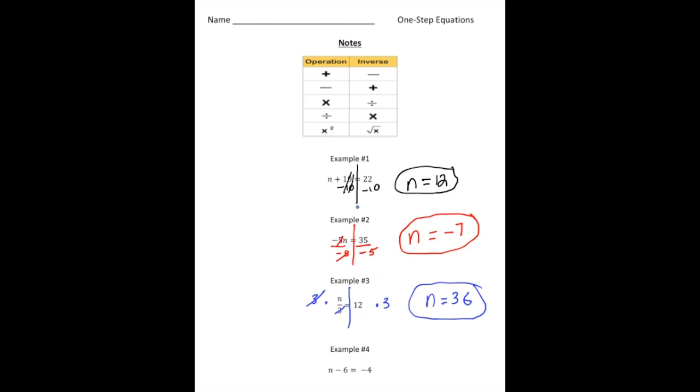And the last one, number 4. Number 4 we have, n minus 6 equals negative 4. So again, this is like taking away 6 or subtracting 6. So the opposite of subtraction, or the inverse of subtraction, is addition. So we're going to add 6 to both sides.